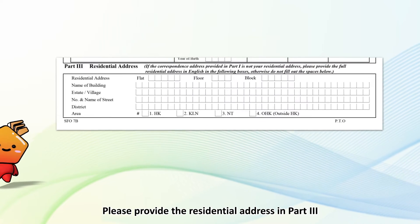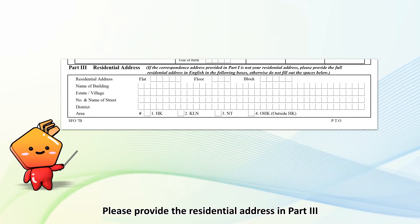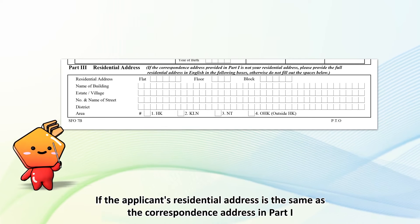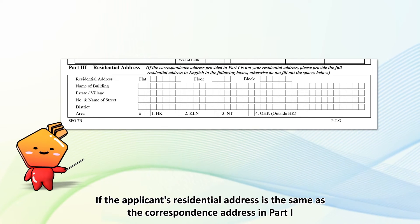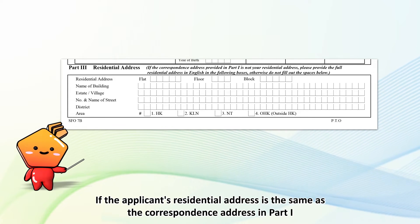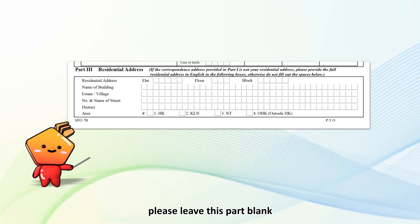Please provide the residential address in Part 3. If the applicant's residential address is the same as the correspondence address in Part 1, please leave this part blank.